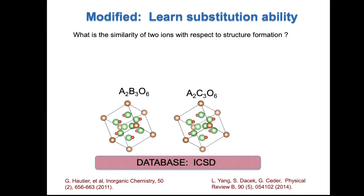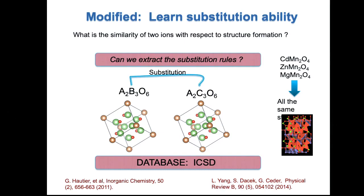This approach worked but was difficult to scale. So we went to another data-mining approach about four or five years later. What we wanted to learn is chemical similarity: if you have two compounds that form the same crystal structure — like A2B3O6 and A2C3O6 — you're learning that B and C can substitute for each other. If you see this many times, you can build a chemical similarity measure for crystal structure. You look in the database and you see a bunch of spinels: cadmium manganese oxide, zinc manganese oxide — and the computer learns that cadmium, zinc, and magnesium can substitute while retaining the crystal structure.